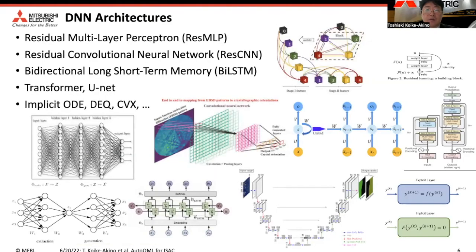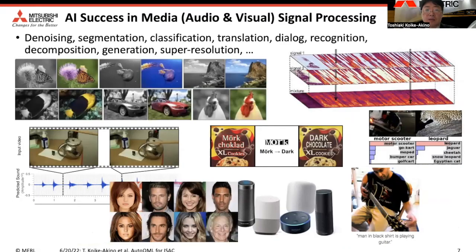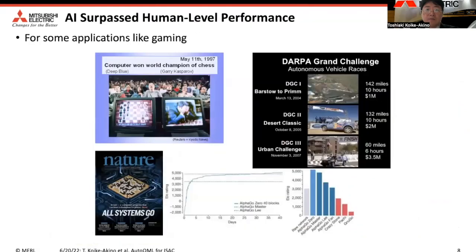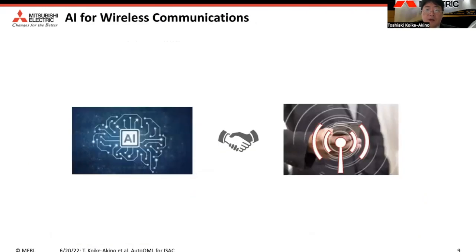As you know, there are many different deep neural network architectures, including residual multilayer perceptron, convolutional neural network, LSTM, transformer, implicit layers like deep equilibrium, and neural ODE. In media signal processing, AI has shown great success — it has even surpassed human-level performance for many applications including gaming. AI has also been used for wireless communications.